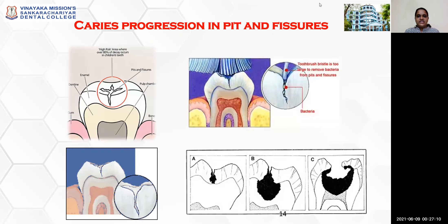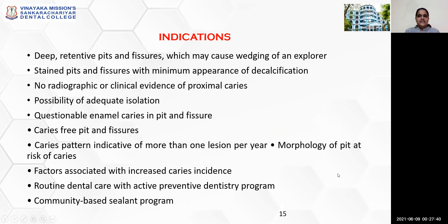Regarding caries progression in pits and fissures, there is a high risk area on the occlusal surfaces wherein 80% of the decay occurs in children's teeth. The toothbrush bristle is too large to remove bacteria from these deep pits and fissures, leading to accumulation of bacteria, which then spreads laterally causing carious lesions.